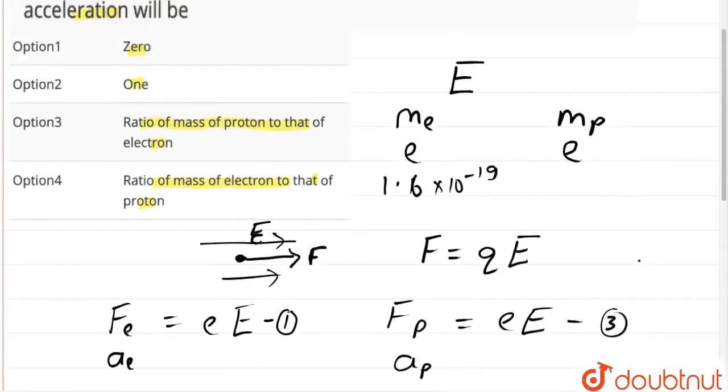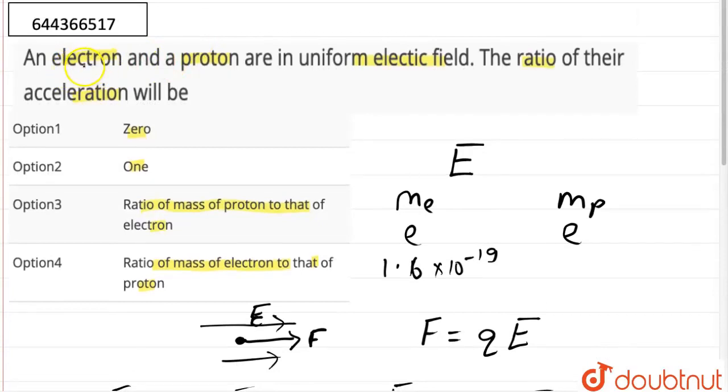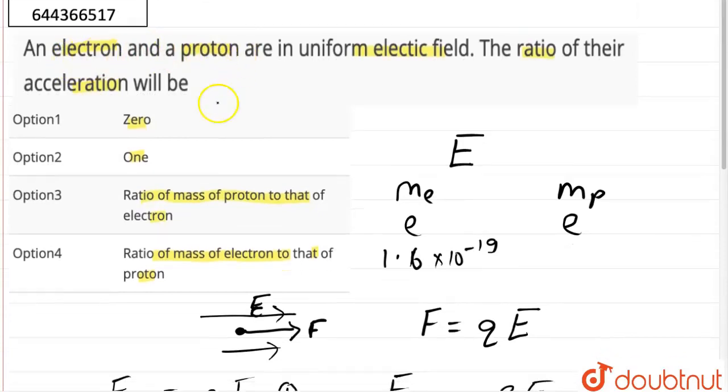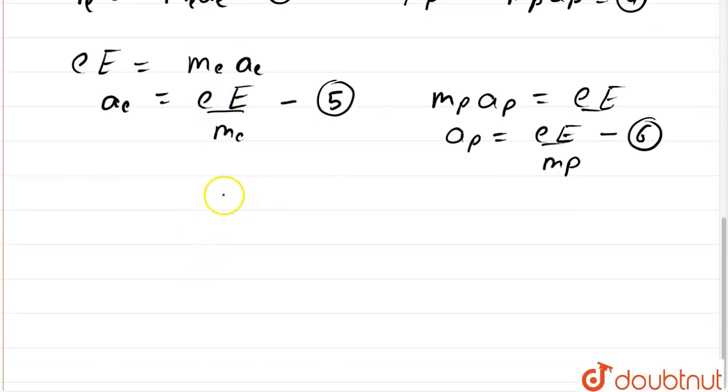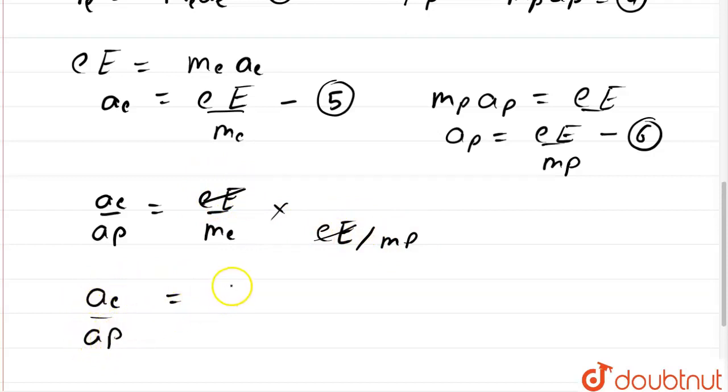Now, according to question, we are asked the acceleration of electron to proton, so dividing 5 by 6 we get acceleration of electron divided by acceleration of proton which is equal to eE upon me divided by eE upon mp. Now this will come out to be, eE will get cancelled out, and acceleration of electron upon acceleration of proton would be equal to mass of proton divided by mass of electron.